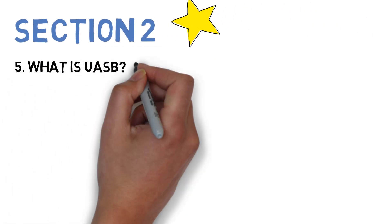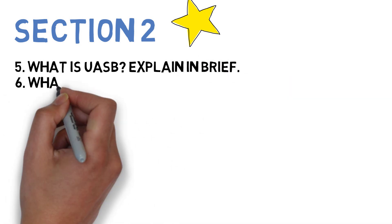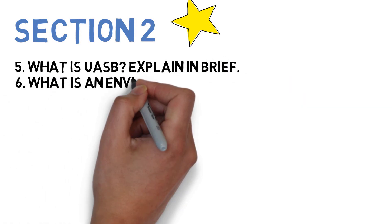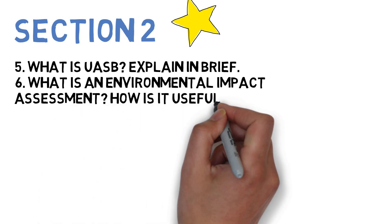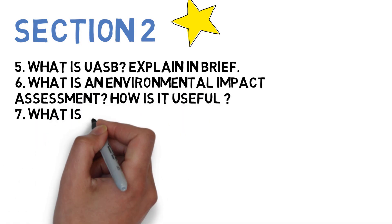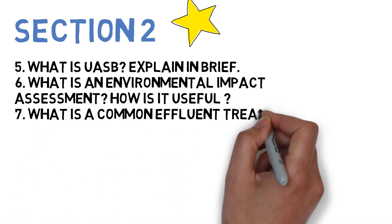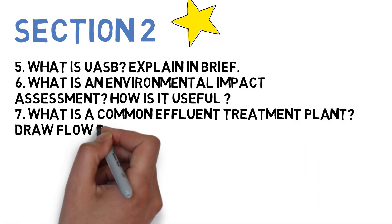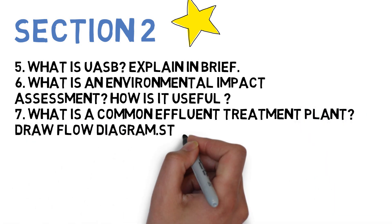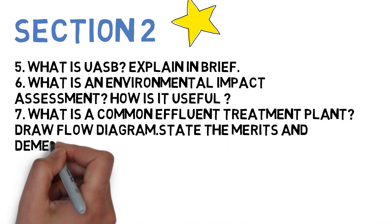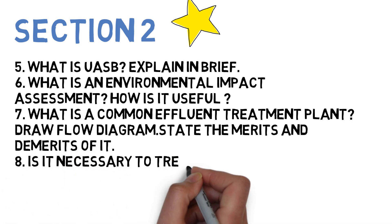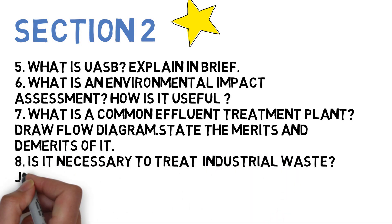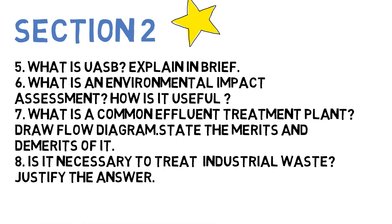Let's go to Section 2. The first question is what is UASB and explain it in brief. Next is what is environmental impact assessment and how is it useful. Next is what is a common effluent treatment plant — draw a flow diagram and explain its merits and demerits. Last is whether it is necessary to treat industrial waste — justify the answer.